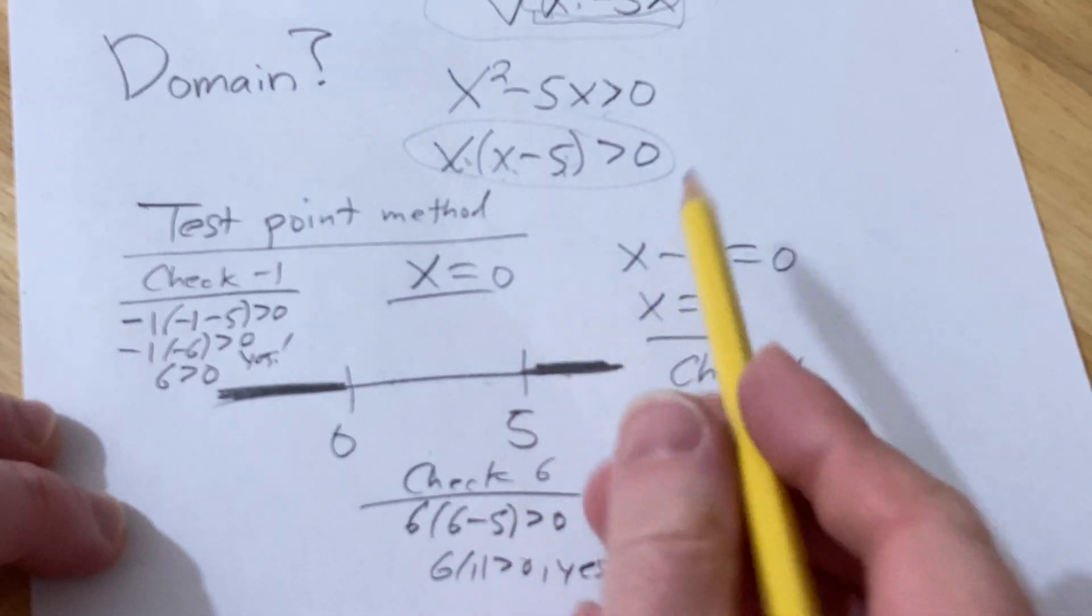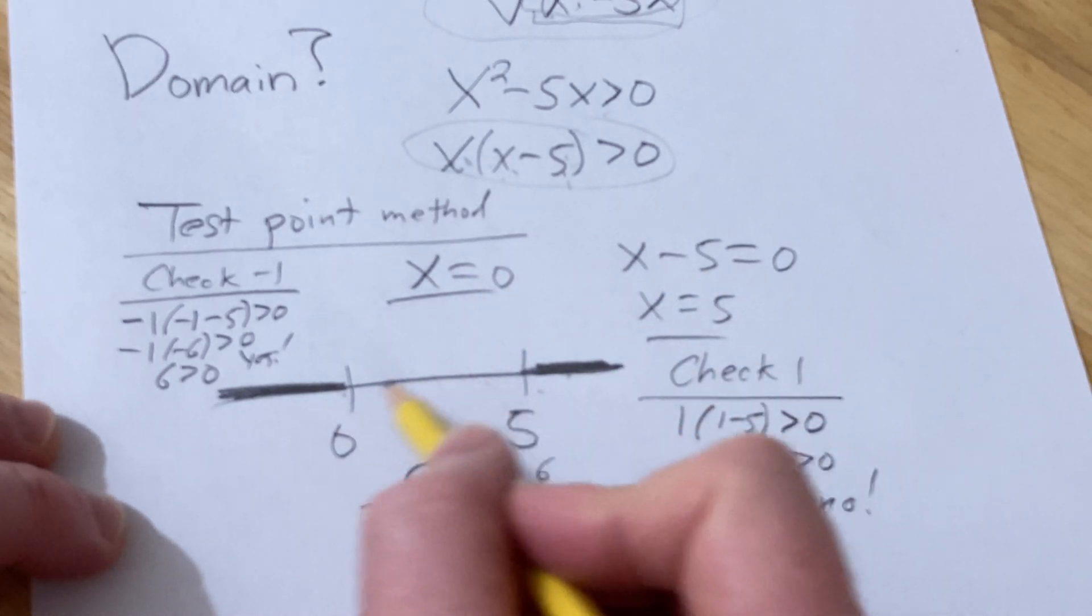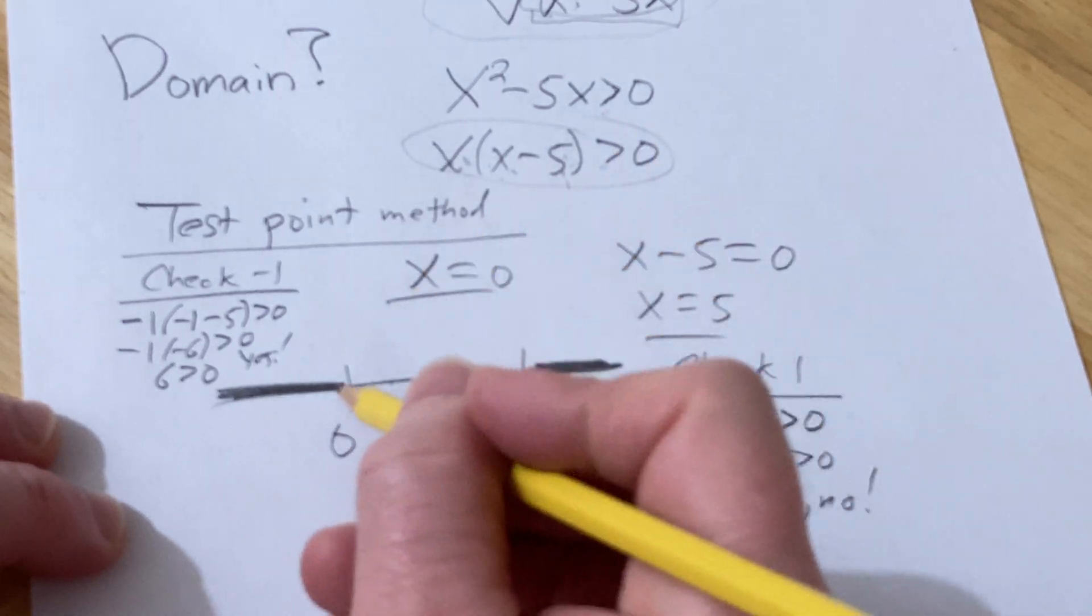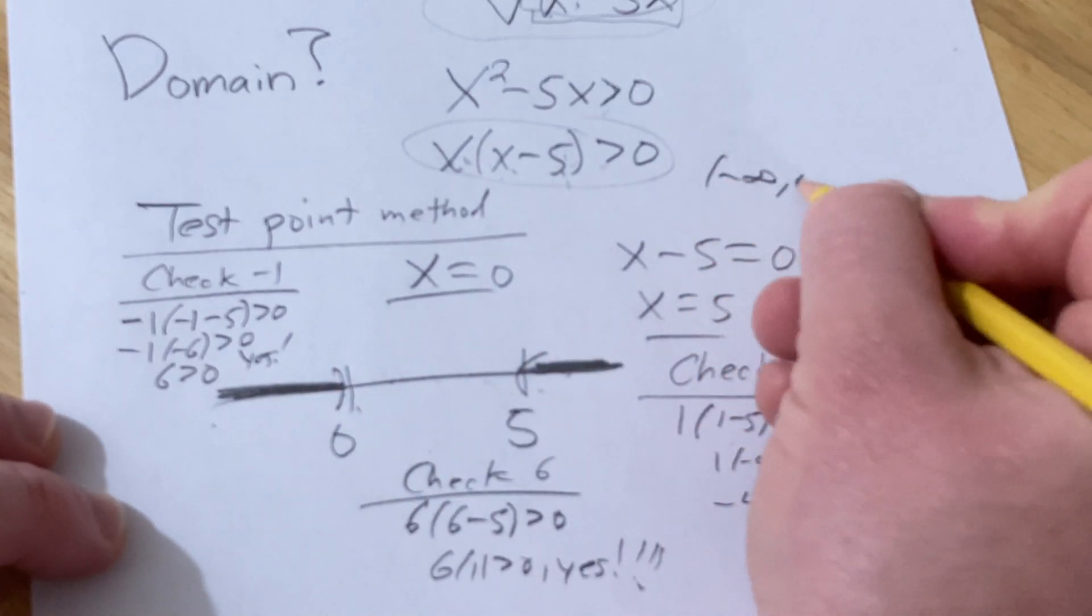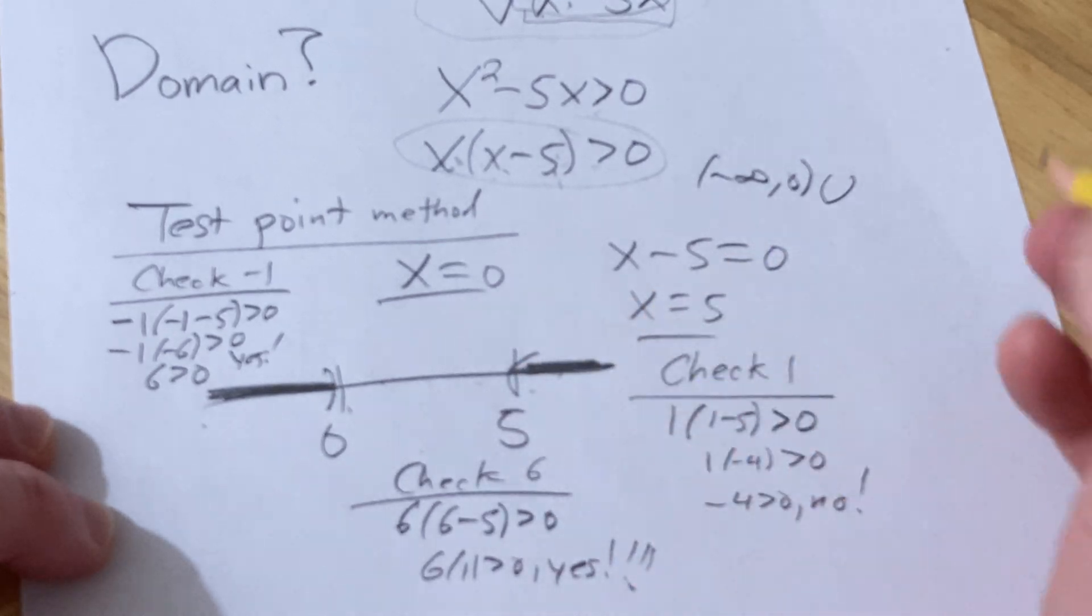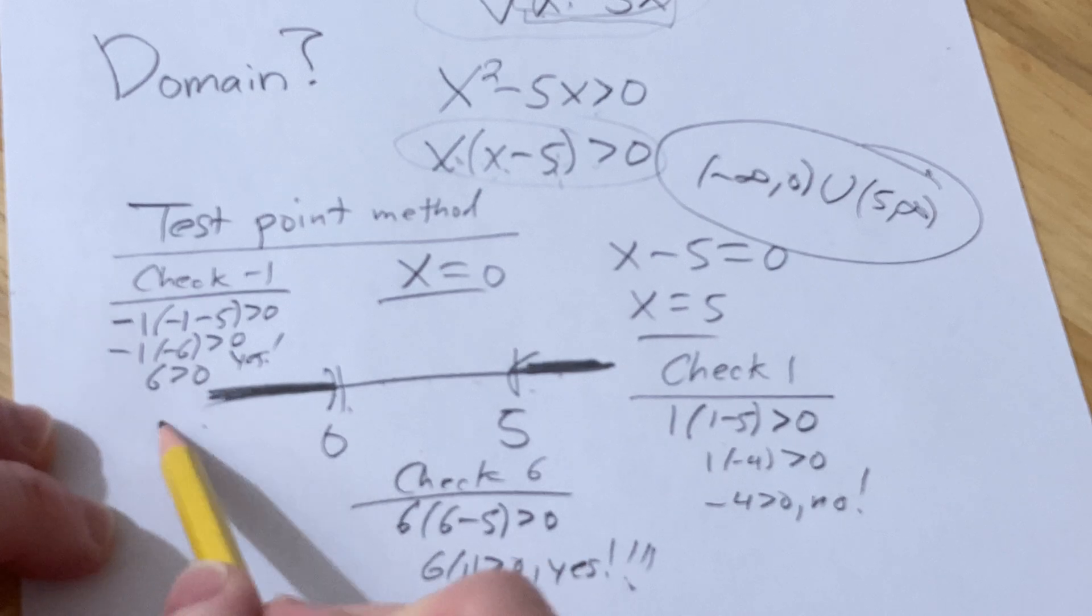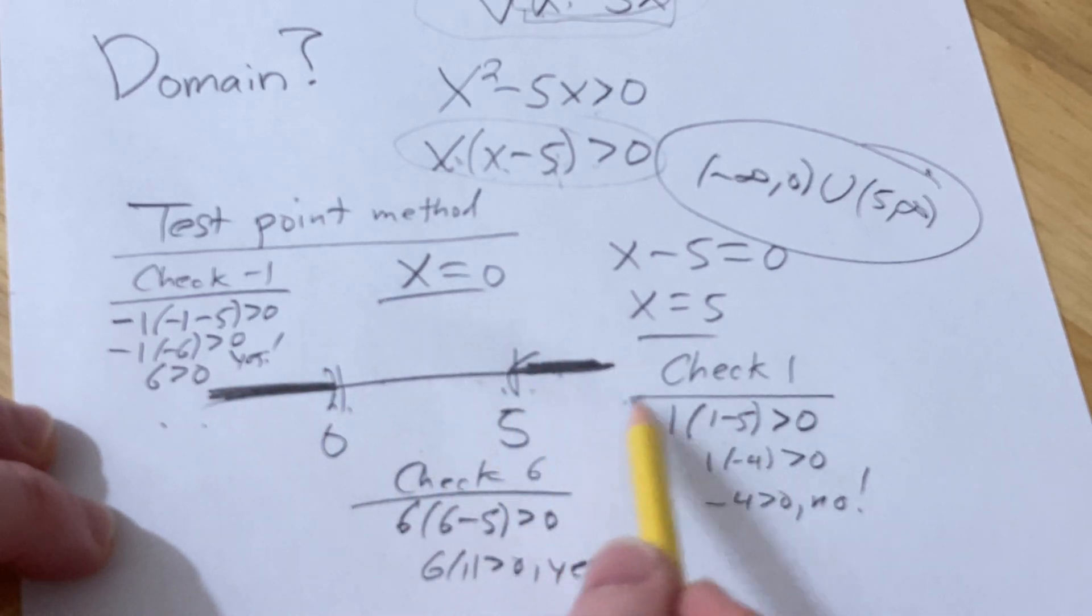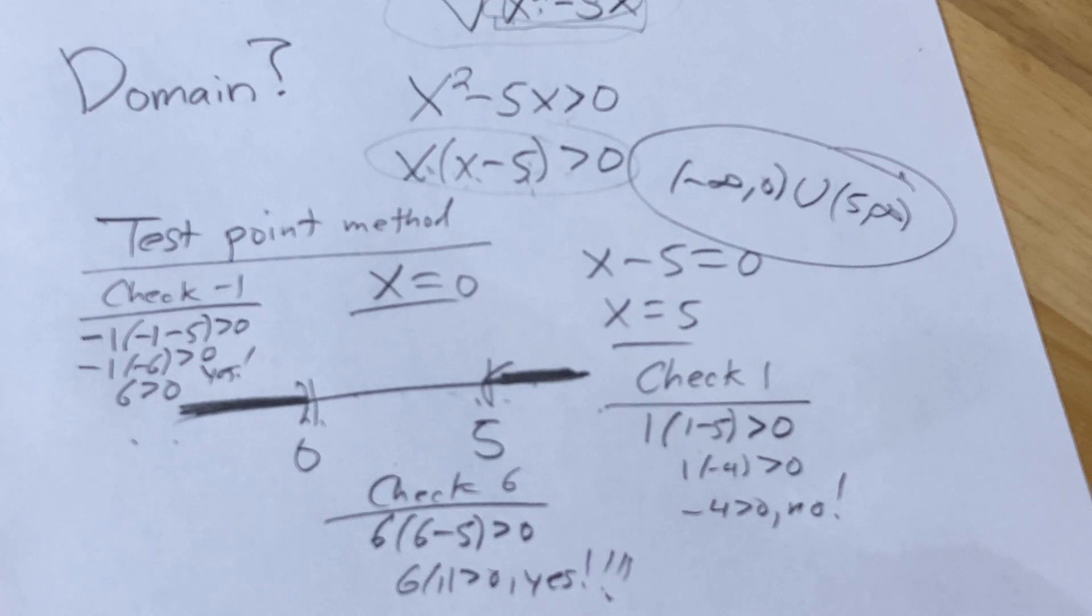The shaded area is the solution to this inequality, which is the domain of this function. We're not including these points because we have a strict inequality. So it would be negative infinity to zero, union five to infinity. Again, negative infinity to zero, union five to infinity. That's the solution to this problem. I hope this video has been helpful. Good luck.